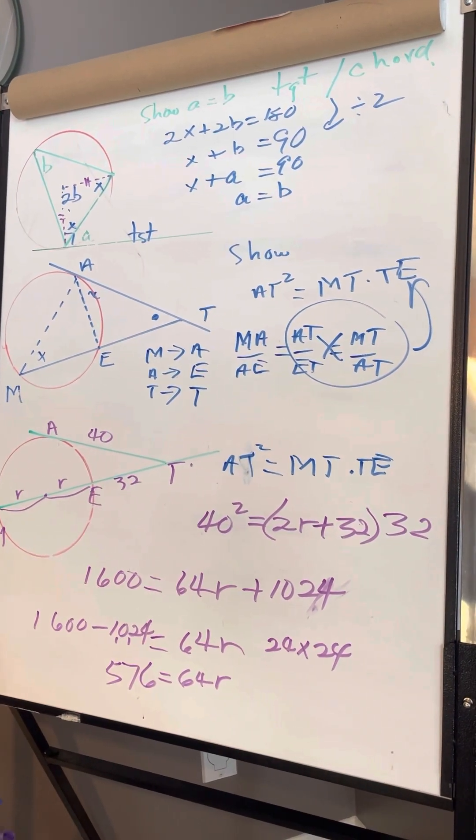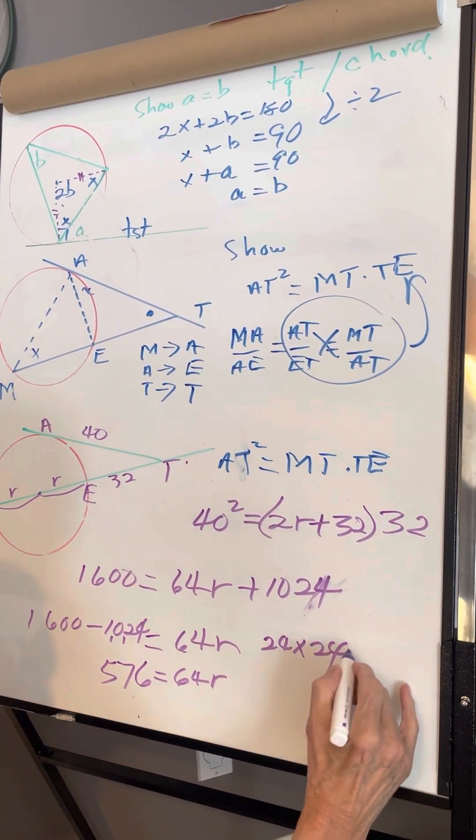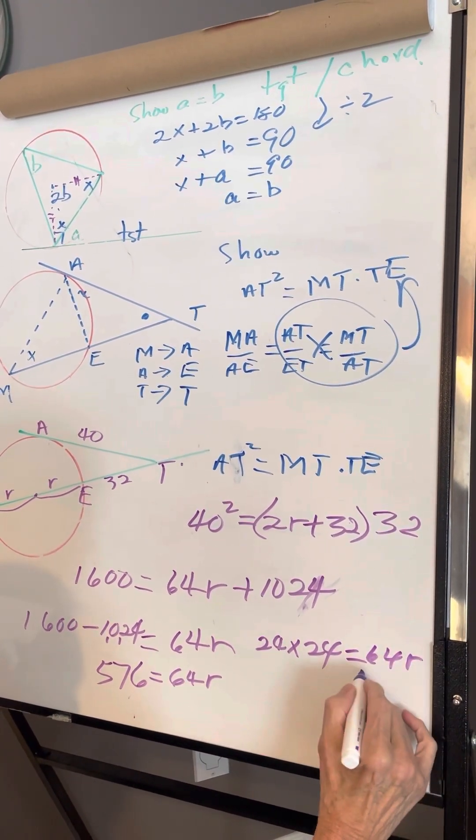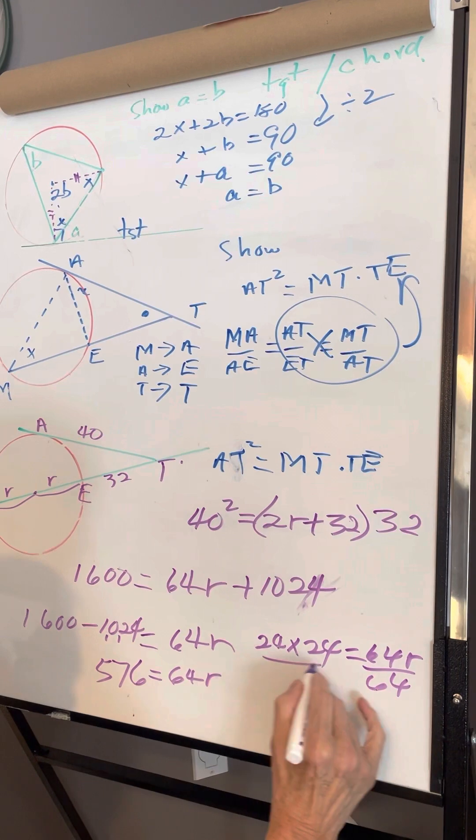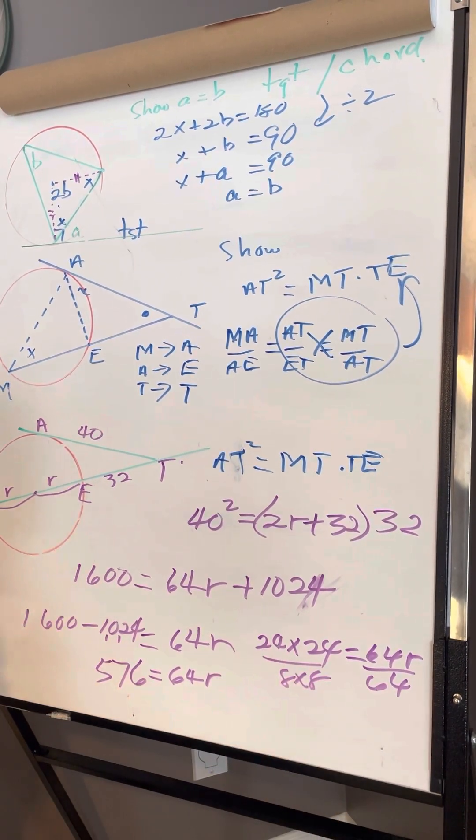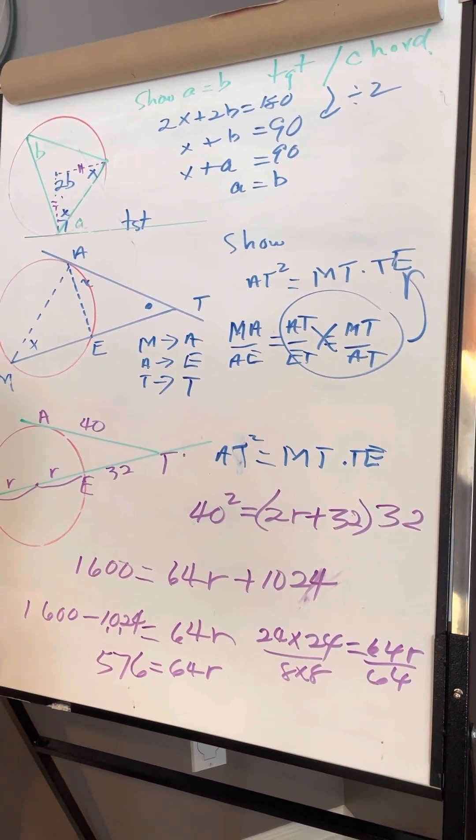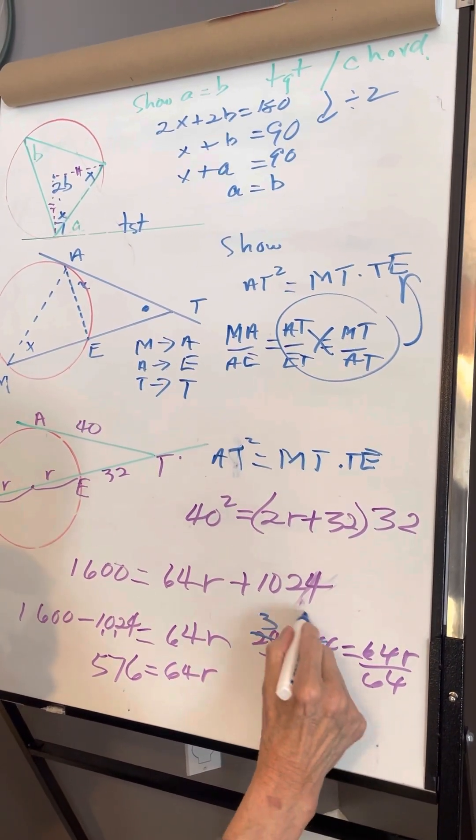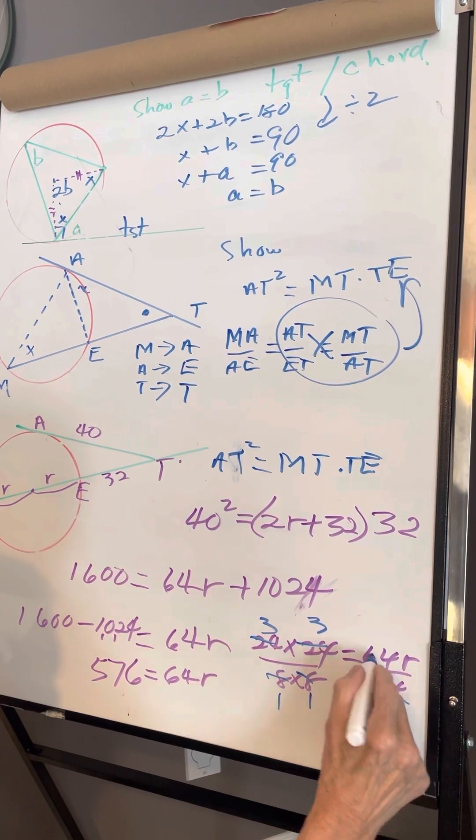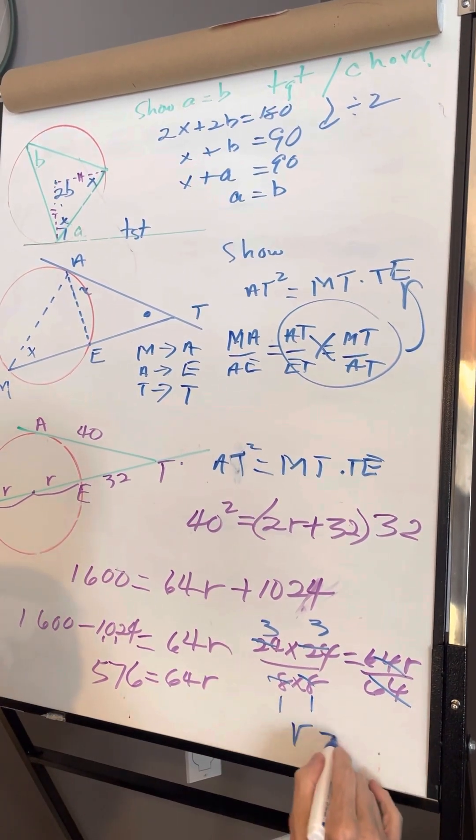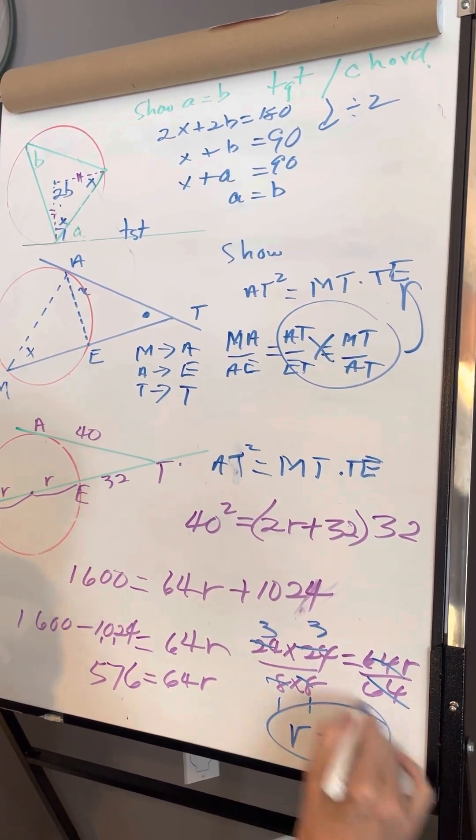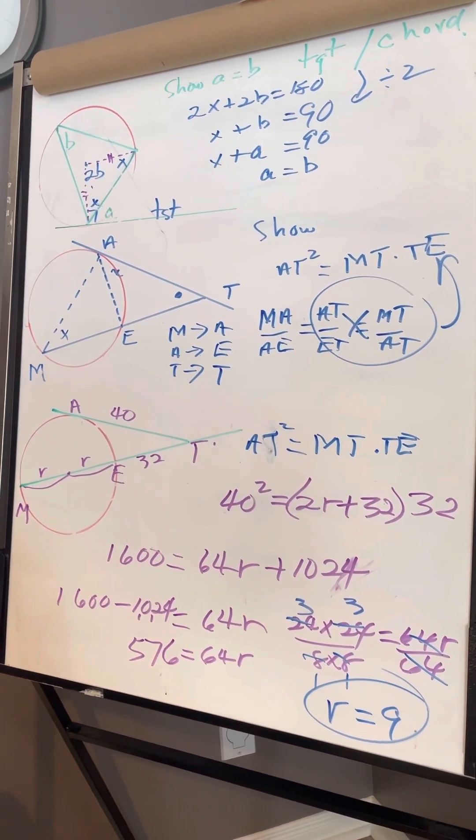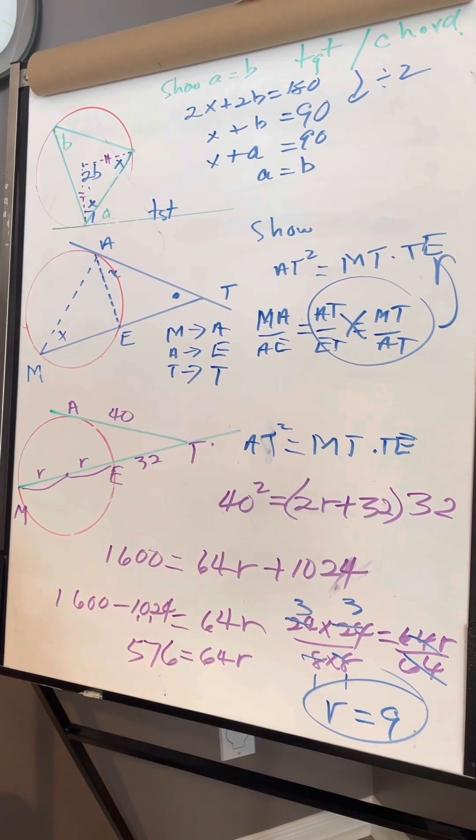So 576 = 64r, and 64 = 8 × 8. Now 8 goes into 24 three times, 8 goes into 4 three times. This cancels, so therefore r = 3 × 3 = 9. Now that is a wonderful little problem. Take it from the top and follow it to the bottom.